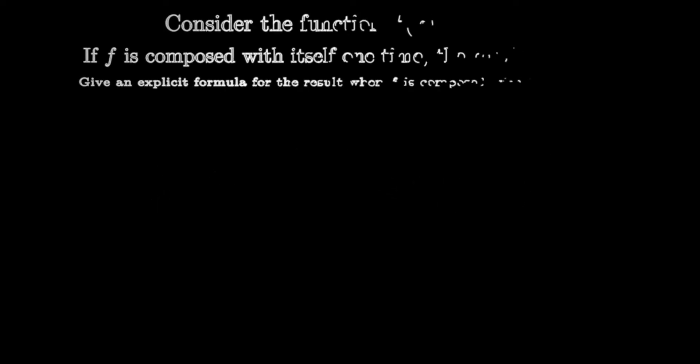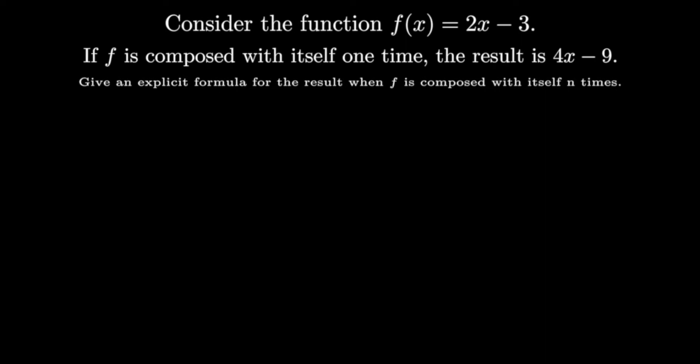Problem 3. Consider the function f of x equals 2x minus 3. If f is composed with itself one time, the result is 4x minus 9. Give an explicit formula for the result when f is composed with itself n times, where n is a natural number.